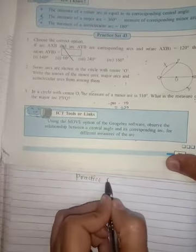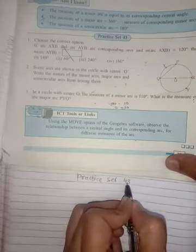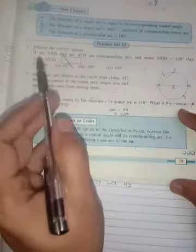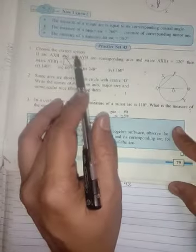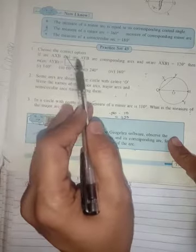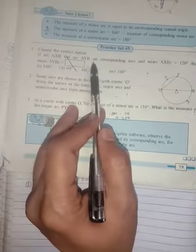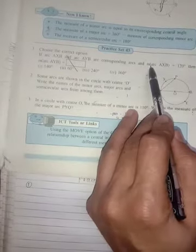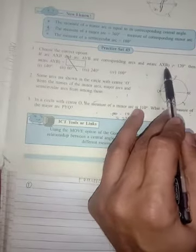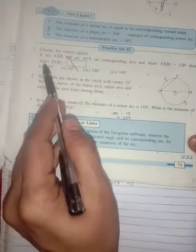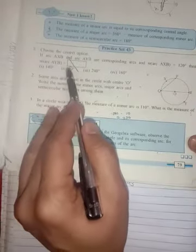First question: if arc AXB and arc AYB are corresponding arcs and the measurement of arc AXB equals 120 degrees, then what is the measurement of arc AYB?